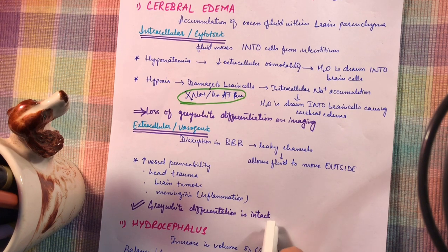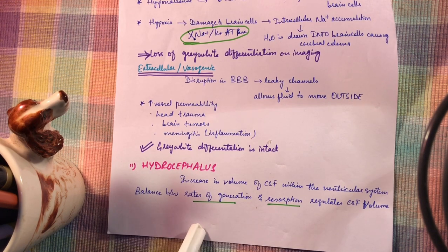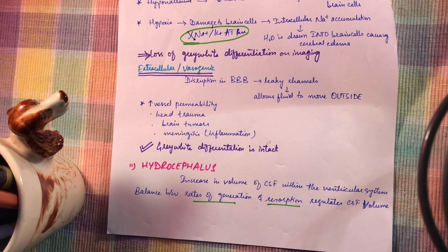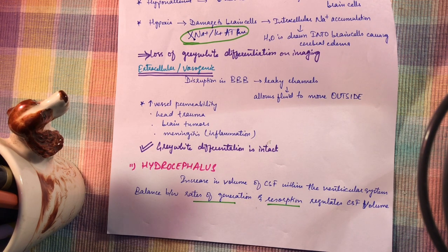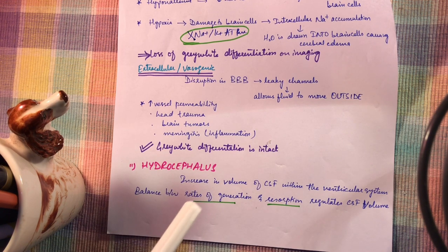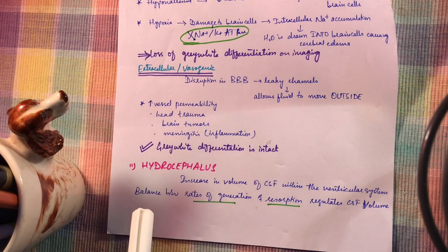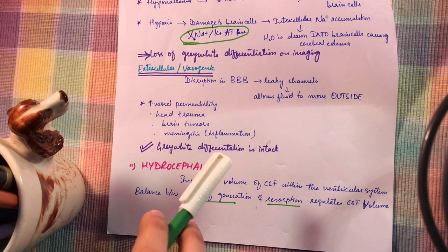Next is hydrocephalus. Before starting, you must know a bit of its anatomy. CSF is made in the choroid plexus. After being produced, it circulates through the ventricular system and flows through the foramen of Luschka and foramen of Magendie into the subarachnoid space, where it is reabsorbed by the arachnoid granulations. Arachnoid granulations are projections of arachnoid matter into the dural venous sinuses.